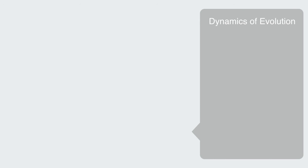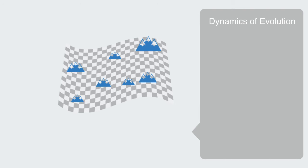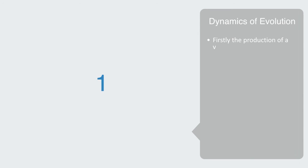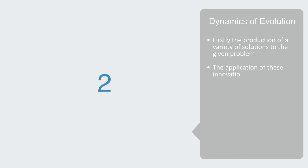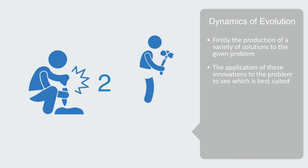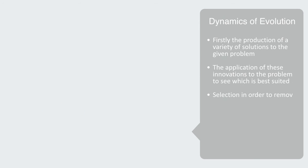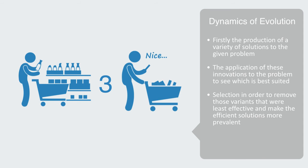Evolution, then, is a search over this landscape in order to find new and better solutions to the given environmental challenges. And evolution involves a number of key stages. Firstly, the production of a variety of solutions to the given problem. Secondly, the application of these innovations to the problem to see which is best suited. And thirdly, selection, in order to remove those variants that were least effective, and make the efficient solutions more prevalent in the next life cycle to the system.